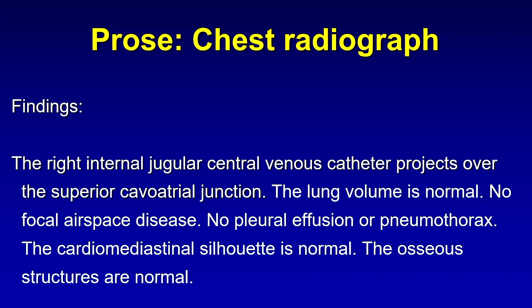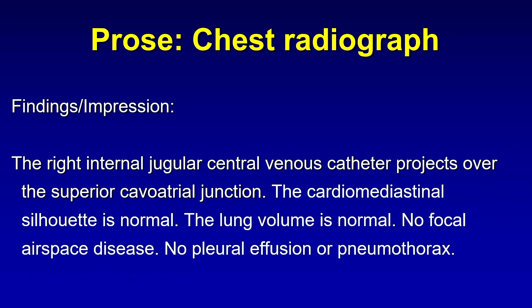For example, in this report you can see that all structures are commented on, including the right internal jugular central venous catheter, the lungs and pleura, the mediastinum and heart, and the osseous structures. If we look at this prose report on the same case, the information is similar but presented in a different order. Also note this radiologist did not talk about the osseous structures.